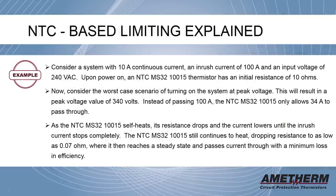Let's look at another example. Consider a system with 10 amp continuous current, an inrush current of 100 amp, and an input voltage of 240 VAC. Upon power on, an NTC MS3210015 thermistor has an initial resistance of 10 ohms. Now, consider the worst case scenario of turning on the system at peak voltage. This will result in a peak voltage value of 340 volts. Instead of passing 100 amp, the NTC MS3210015 only allows 34 amp to pass through. As the NTC MS3210015 self-heats, its resistance drops and the current lowers until the inrush current stops completely.